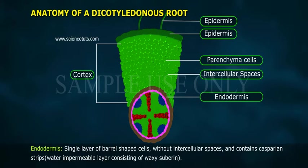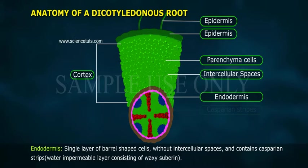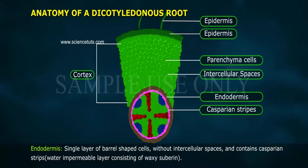Endodermis: A single layer of barrel-shaped cells without intercellular spaces. It contains Casparian strips, a water-impermeable layer consisting of waxy suberin.